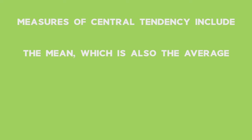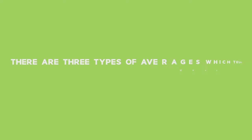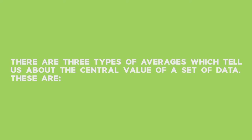Measures of central tendency include the mean, which is also the average, the mode, and the median. There are three types of averages which tell us about the central value of a set of data.